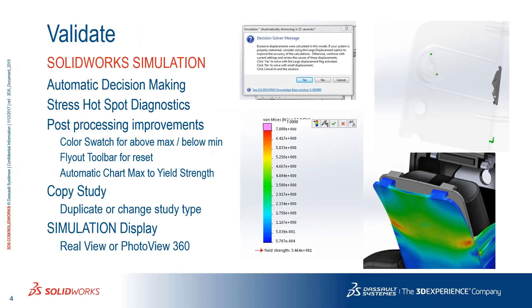Starting out, this is your typical FEA simulation with the SOLIDWORKS simulation packages. One of the improvements in SOLIDWORKS 2017 is automatic decision making — being able to dismiss messages automatically. If you've run simulation on a regular basis, you might have noticed that sometimes you'll get a pop-up 30 seconds or two minutes into the simulation that says you need to make a decision.